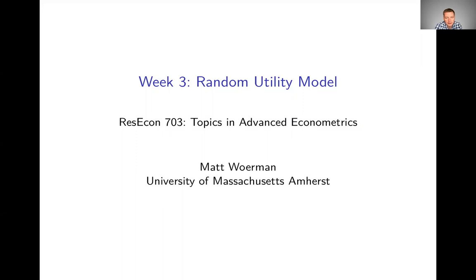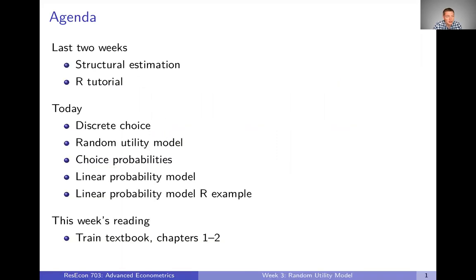Welcome to week three of Advanced Econometrics. In this series of lectures we're going to be talking about the random utility model, which we're going to use to provide the econometric foundations for thinking about discrete choice problems. Just to recap where we've been: the last two weeks were overview. The first week we talked about structural estimation broadly, and last week we went through an R tutorial. When we talk about applications in this course we're going to be using the R programming language, and now we're going to really dig into material about structural estimation.